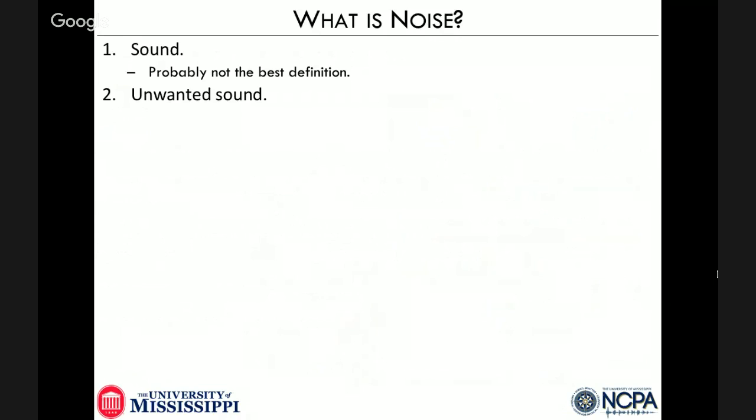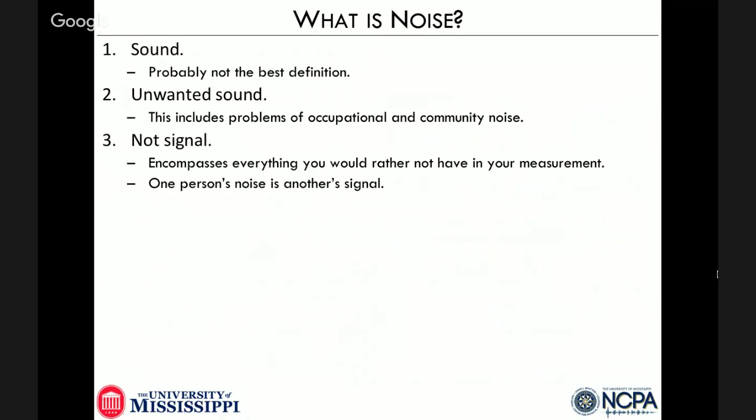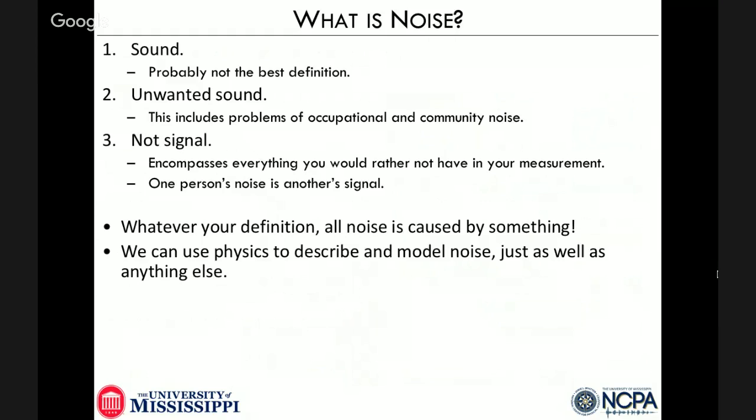There are more specific definitions we could use. Another definition very common in the acoustics community is that of unwanted sound — this would include problems of community noise, occupational noise, that sort of thing. Noise in your environment that you would rather not be there for health or other reasons. But probably the most common definition outside of just acoustics is not signal — meaning it encompasses anything that you would rather not measure. The consequence of this is that one person's noise can be another person's signal.